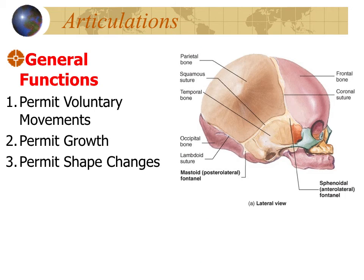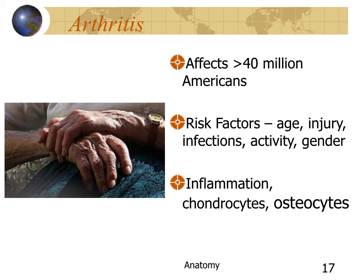In general, joints permit voluntary movement, permit growth, and permit shape changes. A good example of shape change is an infant skull — as it passes through the birth canal, it can dramatically change shape, easing passage, and then allows for growth after birth.